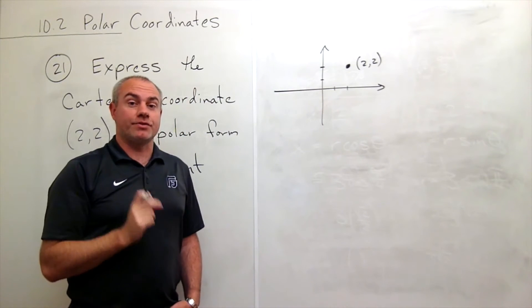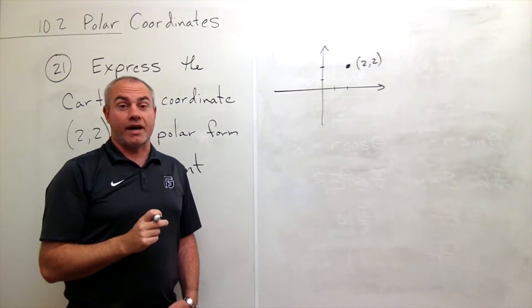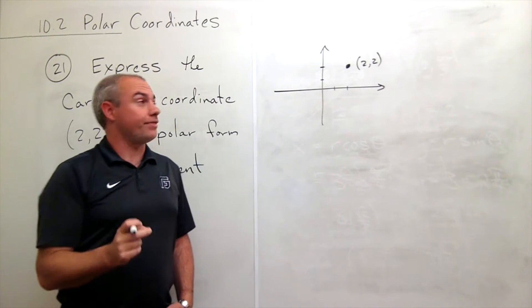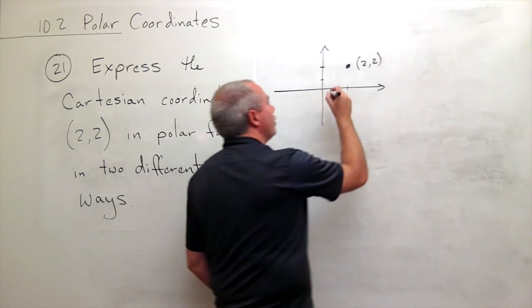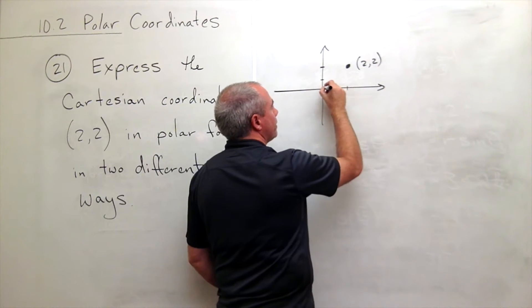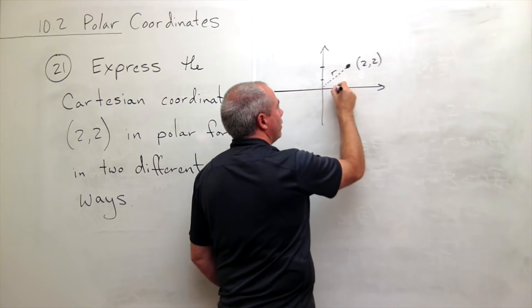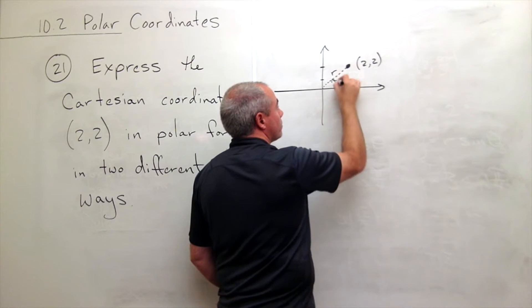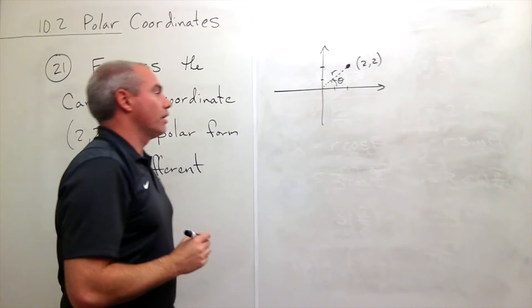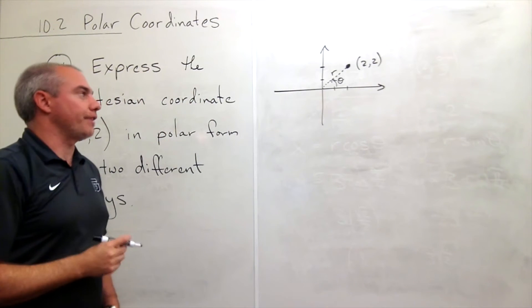All right, I would like to express that as an r and a theta. So what I know right off the bat, just looking at my picture, is this distance is what I call r and this angle is what I call theta. All right, so I need to figure out what r and theta are.